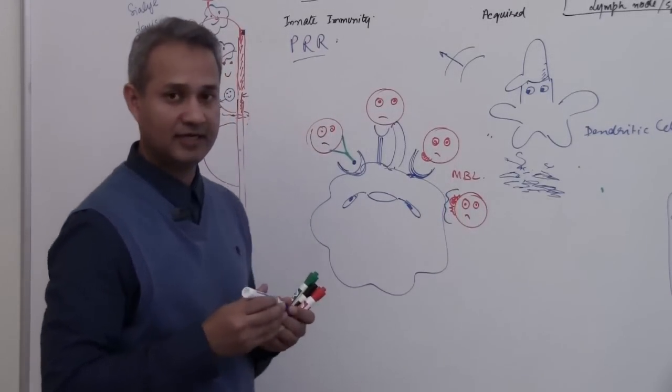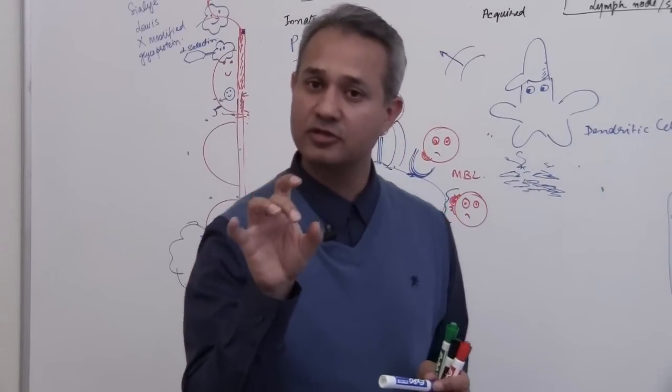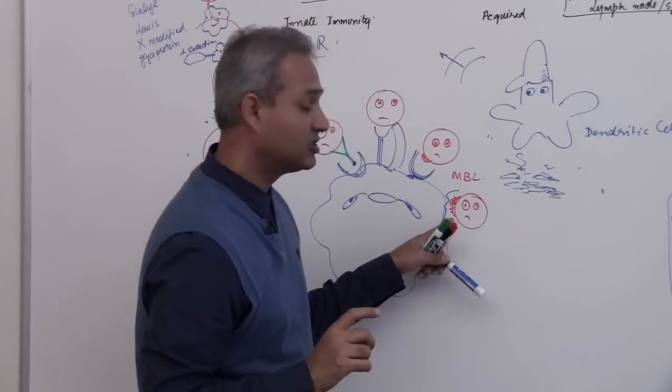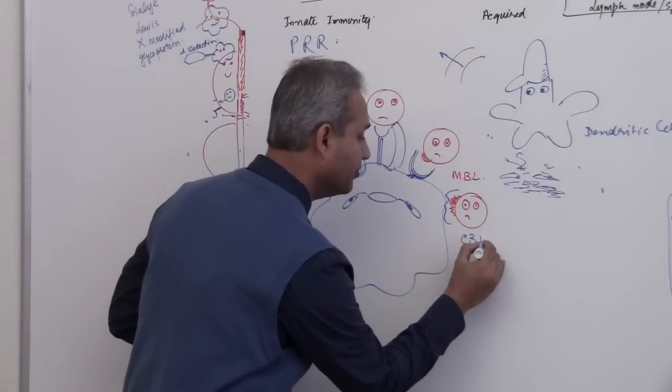So these are like little teeth neutrophil has. It has a tooth for complement C3B.